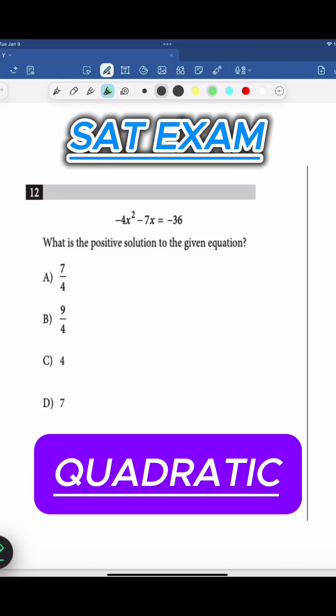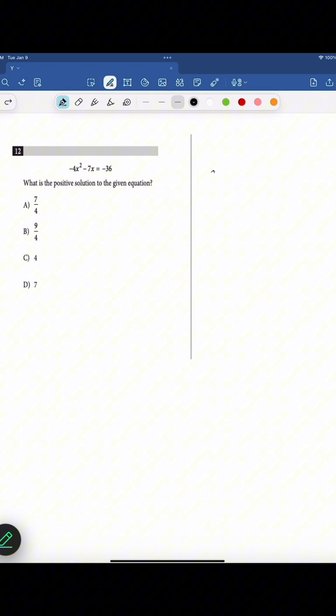We are going to solve a quadratic equation question from the SAT exam. The equation given is minus 4x square minus 7x equals minus 36. We have to find the positive solution, which means we have to find the positive root for this given equation.